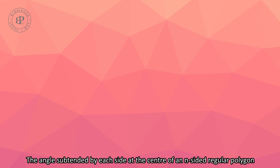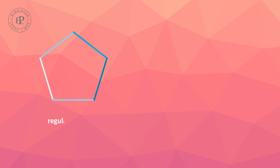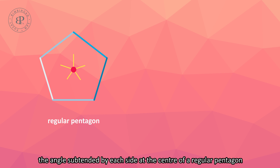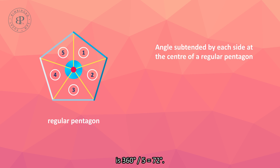The angle subtended by each side at the center of a regular polygon is given by 360 over n. For example, the angle subtended by each side at the center of a regular pentagon is 360 over 5, which equals 72 degrees.